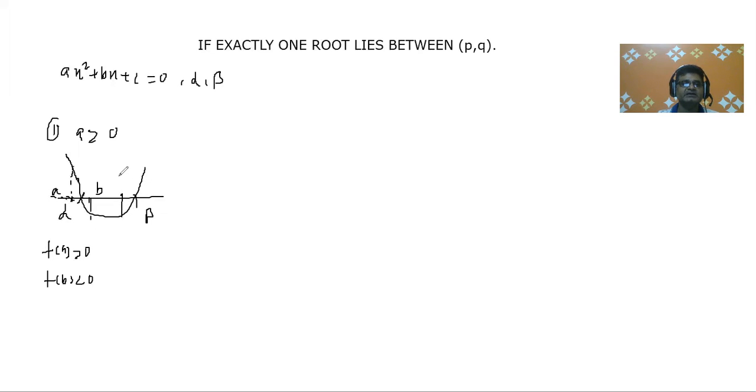Here also we see that this is a and this is b. So in this case what we are finding that f(a) is less than zero and f(b) is greater than zero. Why in case two if I take the roots alpha and here beta, and if I say a here and b here, so we can see that f(a) is less than zero and f(b) is greater than zero.